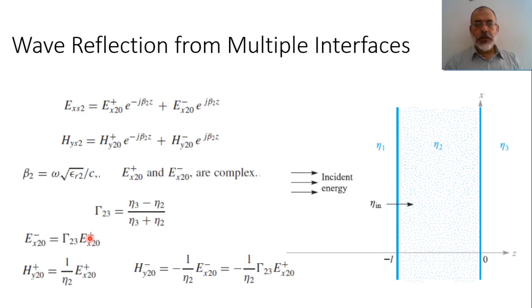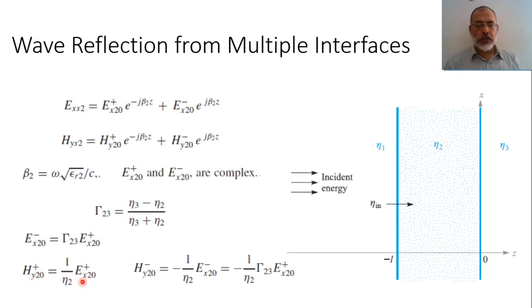In this case, all field components are defined in terms of the forward propagating electric field in medium 2, because the backward propagating field is determined in terms of the forward field, and the magnetic field is determined in terms of the electric field. The forward magnetic field amplitude is determined from the forward electric field amplitude, and the backward magnetic field is determined from the backward electric field, which itself is determined from the forward propagating electric field.